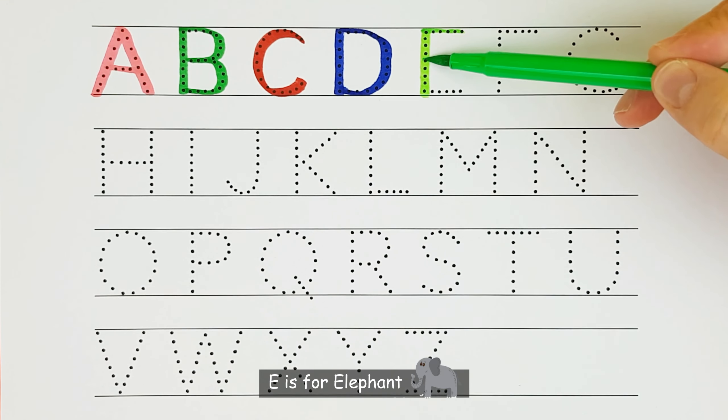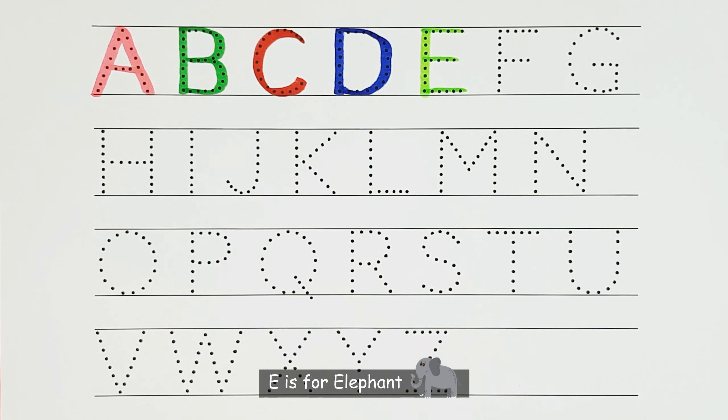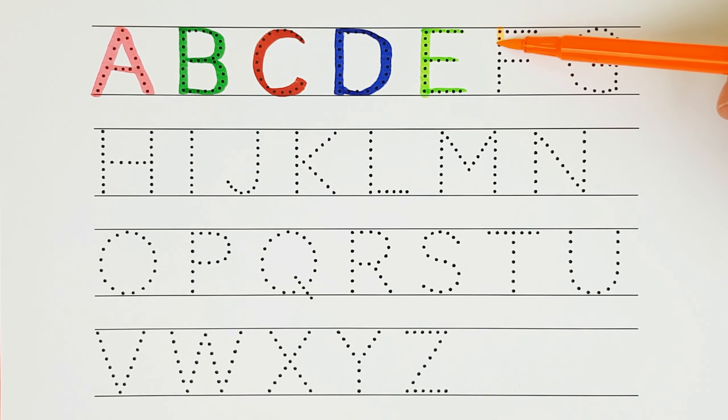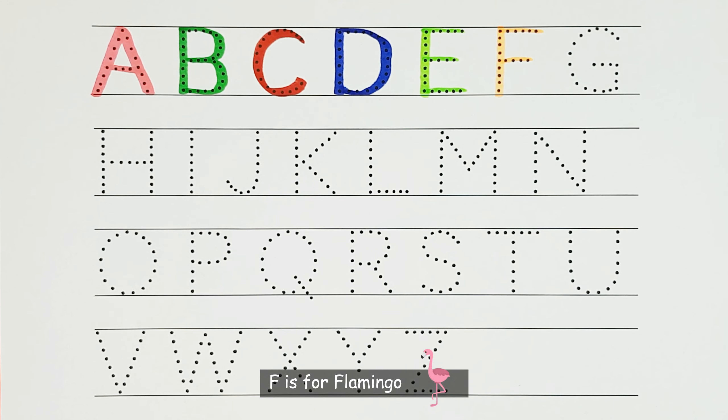E. E is for elephant. E. F. F is for flamingo. F.